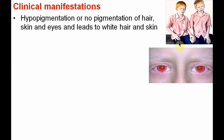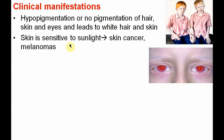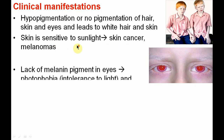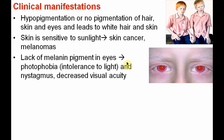As you can see in this picture, the skin is sensitive to sunlight, as one of the important functions of melanin is to prevent ultraviolet radiation of the sun. So the skin is sensitive in these patients, which can lead to skin cancer or melanoma formation. Lack of melanin pigment in the eyes leads to photophobia — intolerance to light — as well as nystagmus, which is rapid horizontal movement of the eyeball, and decreased visual acuity. You can see the diagram showing the ocular manifestations of albinism.